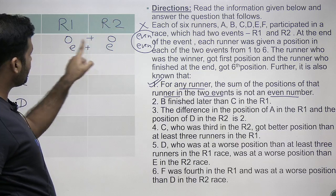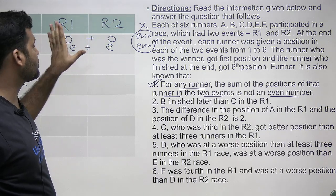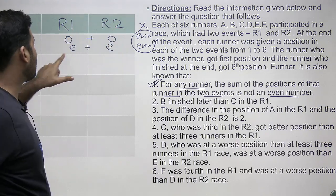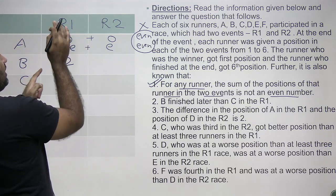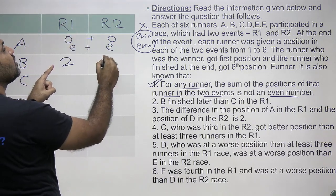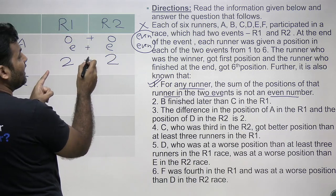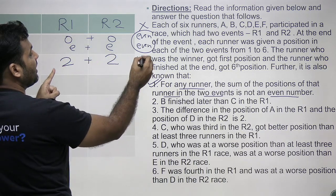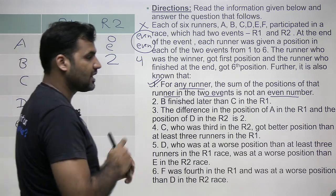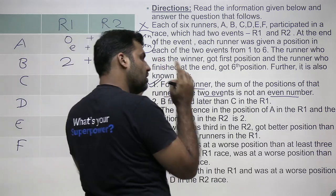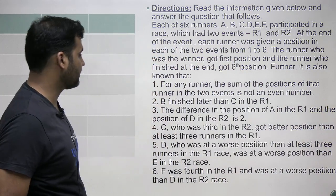Since the sum of both ranks must NOT be even, that means one of the ranks has to be odd and the other has to be even. So both ranks for a particular person must differ in parity. That means if I give rank 2 to B in R1, I cannot give 2 to B in R2, because 2 plus 2 equals 4, which is even. Both ranks being different in parity is the key inference from this first statement.